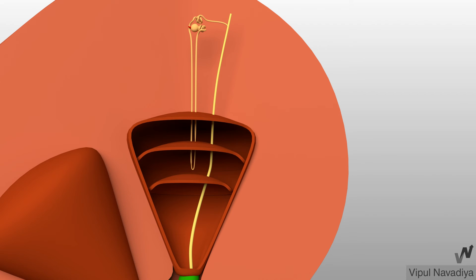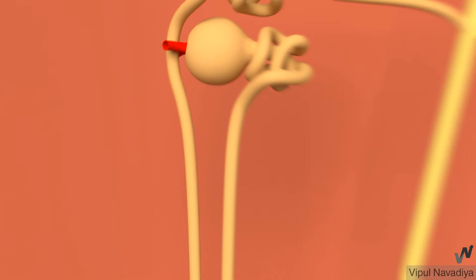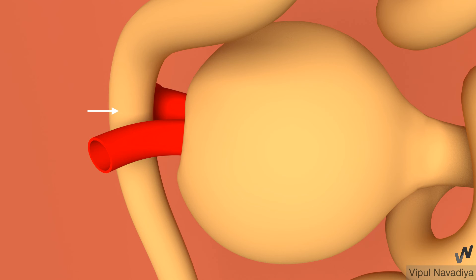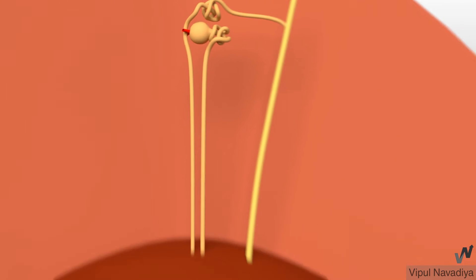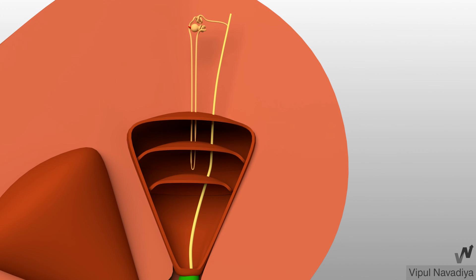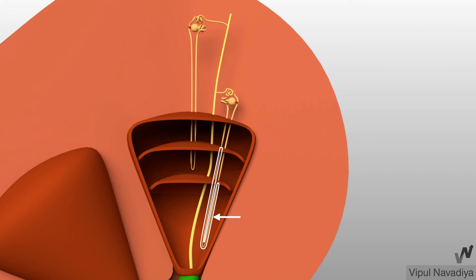The ascending limb comes out of the medulla and approaches the renal corpuscle of the same nephron. Its end lies in between the afferent and efferent arteriole of the same nephron, where it has specialized cells called macula densa, which are part of the juxtaglomerular apparatus. This is the loop of Henle of a cortical nephron. In a juxtamedullary nephron it is slightly different — the thin portion is longer and goes deeper into the inner medulla, playing a very important role in concentrating urine.